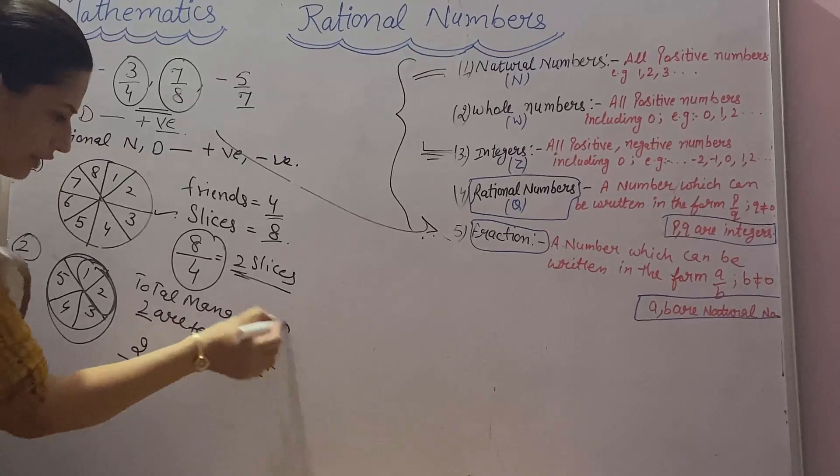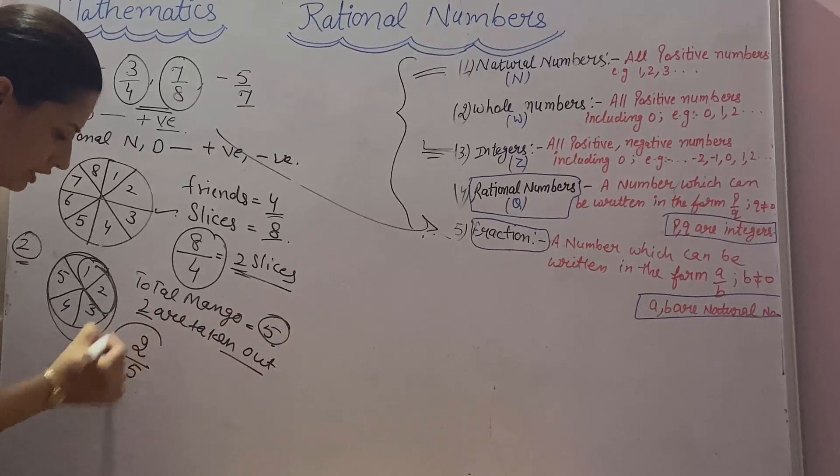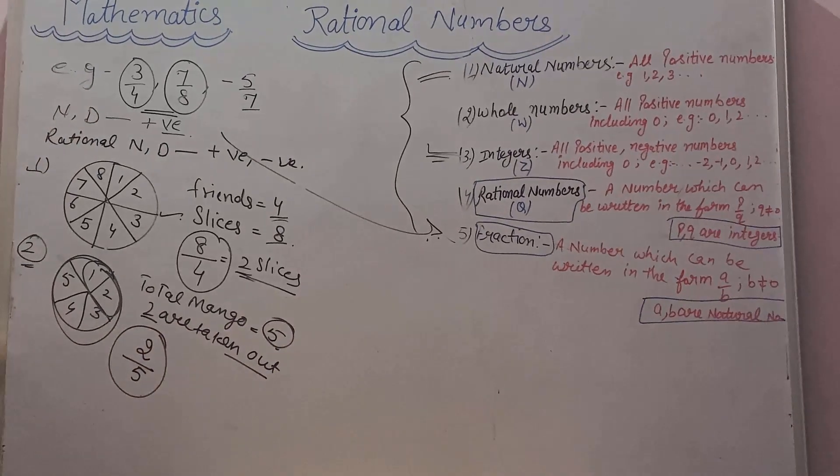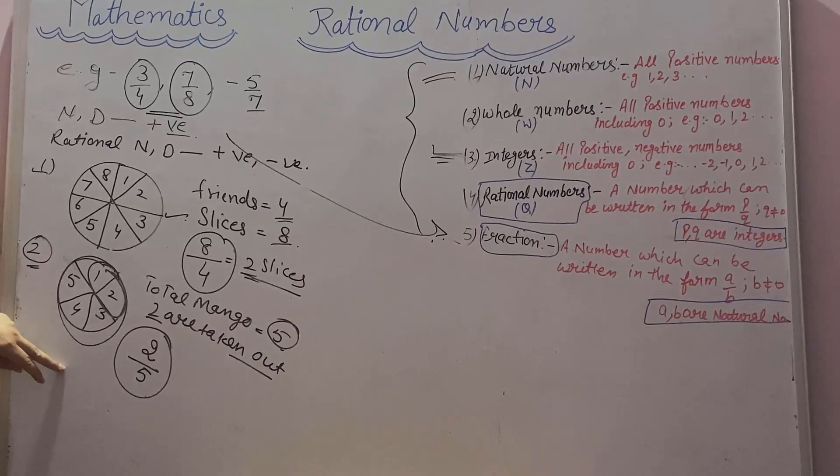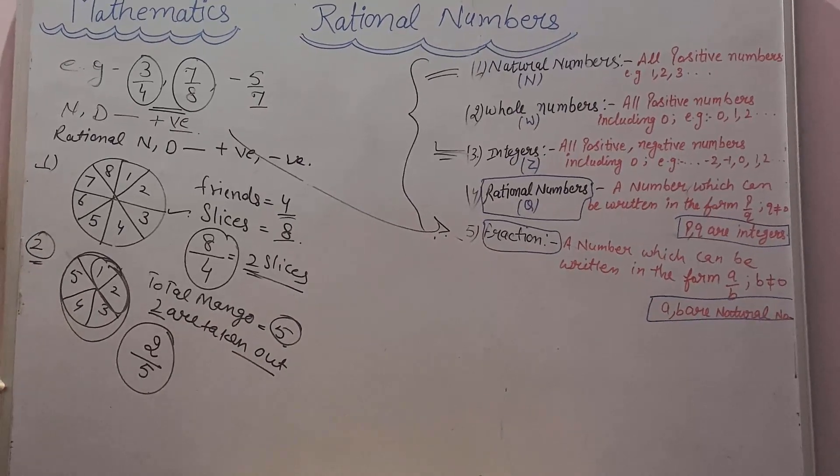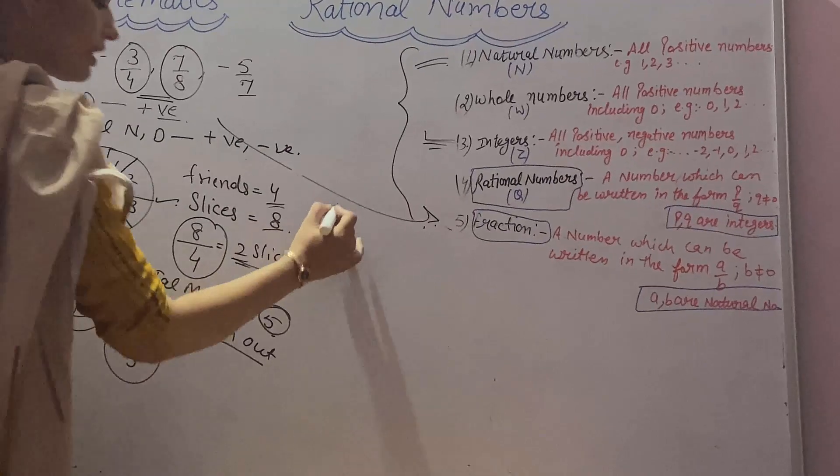2 taken out and total mangoes are 5. You can put this in a rational number form 2 by 5.